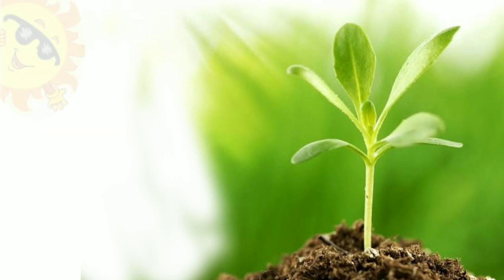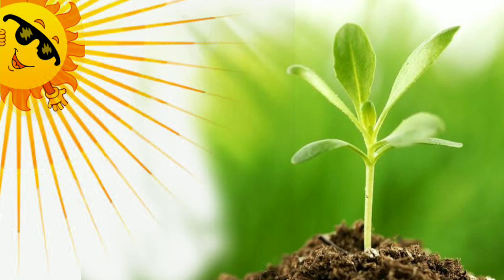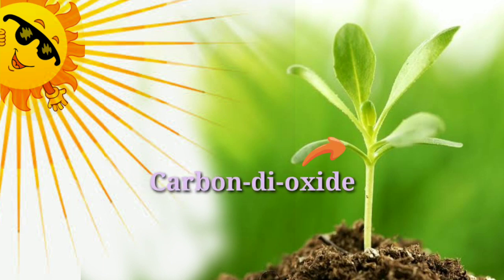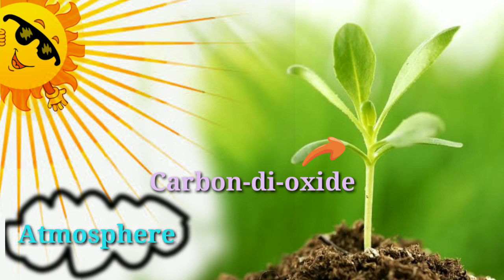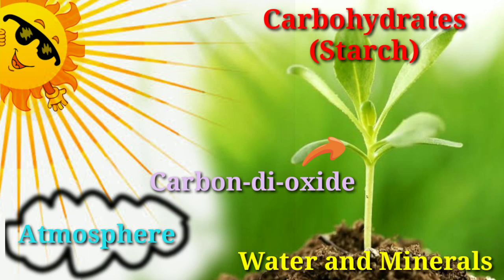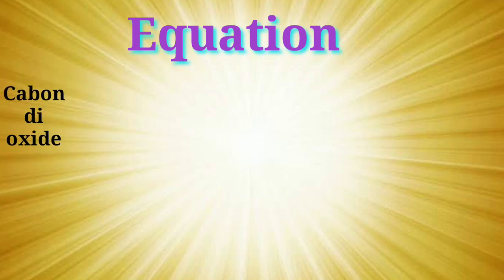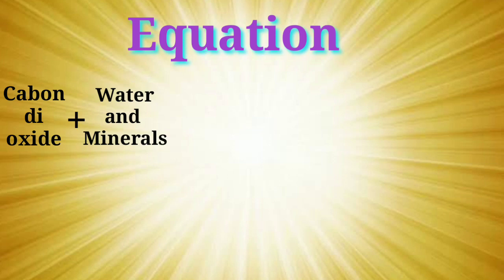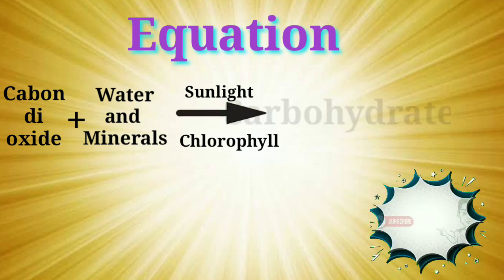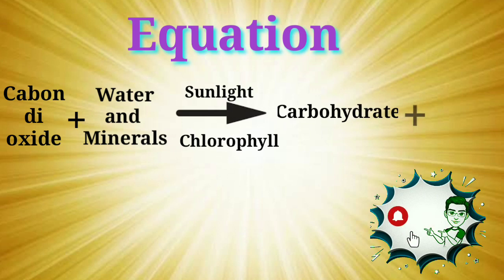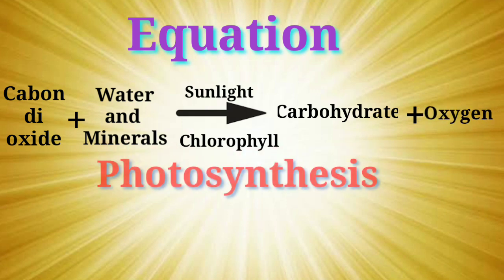Let's sum up all the steps: sunlight falls on the leaves and the energy is captured by the chlorophyll; carbon dioxide from the atmosphere is absorbed by the stomata; water and minerals are absorbed by the roots and transferred to the leaves. Using all these, the leaves synthesize carbohydrates, which are stored in the form of starch, and oxygen is released into the atmosphere. In equation form: carbon dioxide plus water, in the presence of sunlight and chlorophyll, yields carbohydrates and oxygen.